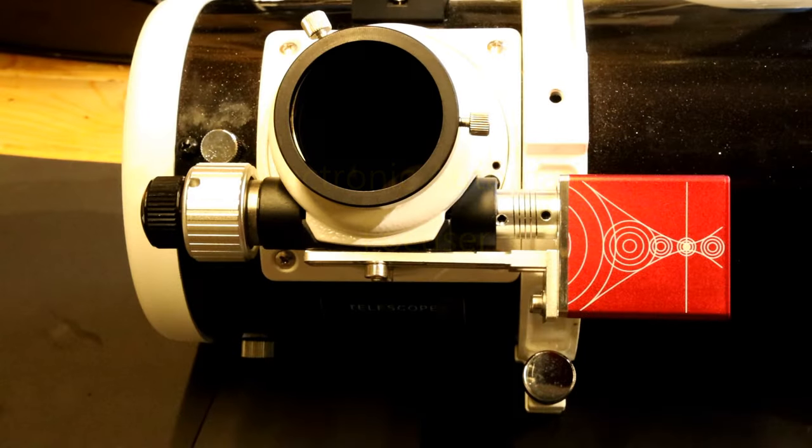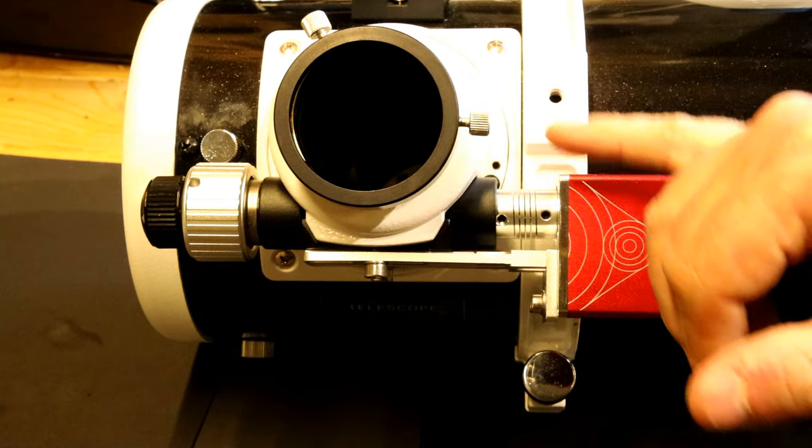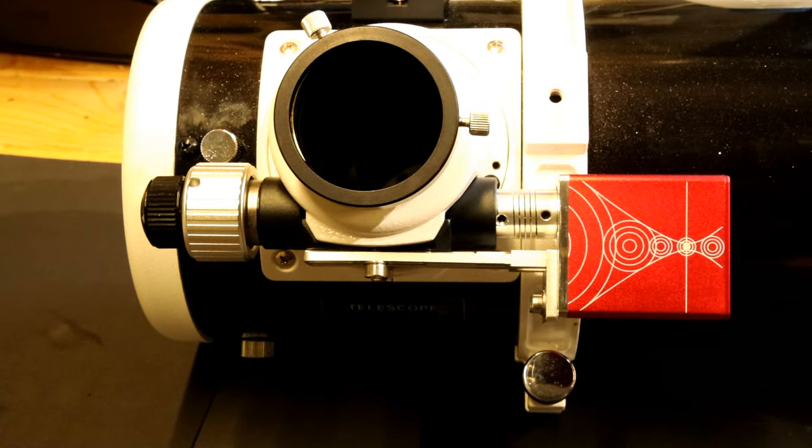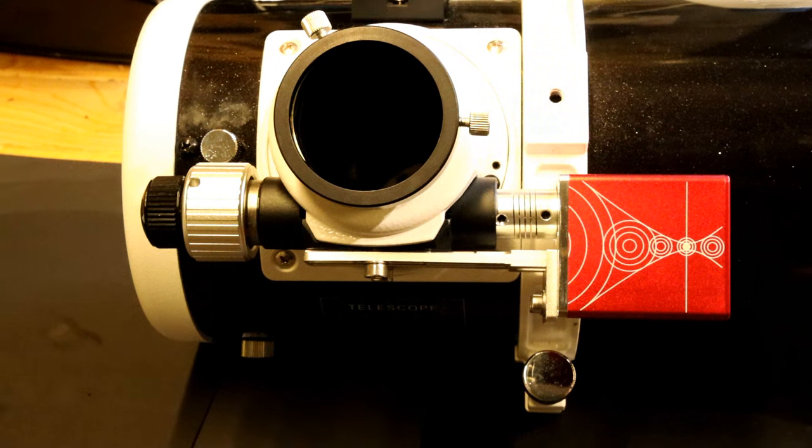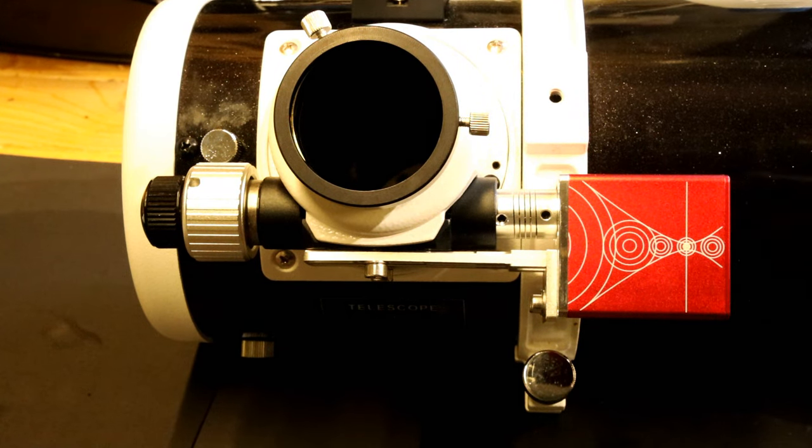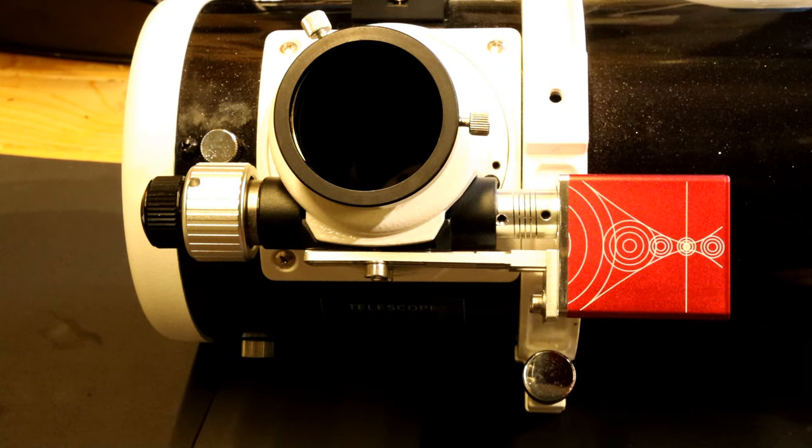One thing I did find with this focuser was that sometimes it would slip, especially if you've got a heavy camera and imaging train attached. I did look at upgrading the focuser, but they were proving to be hard to source or quite expensive. An actual cheaper option that has added loads to the usability of this scope was to actually add an electronic automatic focuser.